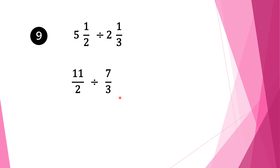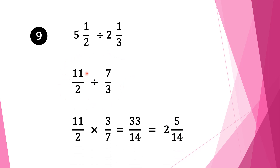Now we have a normal fraction division. We keep the first fraction 11 over 2 as it is, change the division sign into multiplication, and take the reciprocal of the second fraction. It is 7 over 3, so we write it down as 3 over 7. We can't cancel anything. So we multiply our numerators: 3 times 11 is 33, and our denominators: 7 times 2 is 14. Our solution is an improper fraction, so our final solution is 2 and 5 over 14.